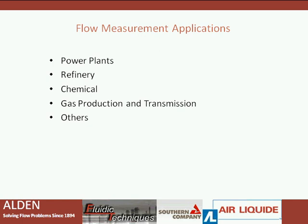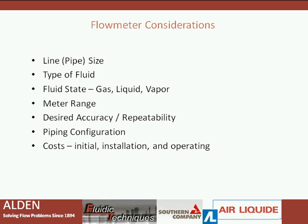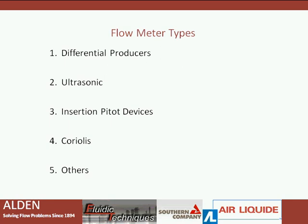There are many applications for flow measurement: power plants, refineries, chemicals, gas production transmission lines, as well as many other applications. There are several things to consider when selecting a primary flow element: pipe size, type of fluid, the state of the fluid, the meter range required, accuracy required, piping configuration, initial cost, installation cost, and operating cost. There are several types of flow meters including differential producers, ultrasonic flow meters, insertion fetal devices, Coriolis, and many others.